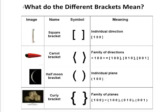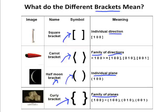After we've learned all that new information, it's good to review. So, let's go over what the different brackets mean to review. We have here our square brackets, which are used for individual directions. Here, we have caret brackets, and these are used for families of directions. The half moon brackets over here are used for individual planes, and the curly brackets are used for families of planes. Now, there's no real fancy way to memorize this. You just need to burn this table into your brain to be sure that you understand what you're asked and what you're giving.